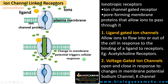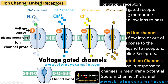The second subtype is voltage gated ion channels, where opening and closing of the ion channel is in response to changes in membrane potential. A voltage sensor is attached to the ion channel protein; this senses voltage, and changing voltage causes opening of the channel. These channels include sodium ion channels, calcium ion channels, chloride ion channels, and potassium ion channels.